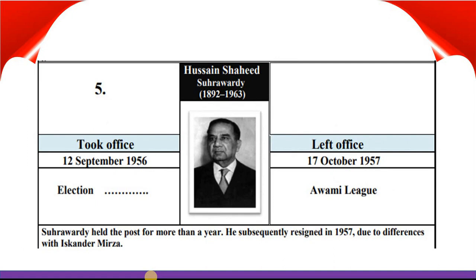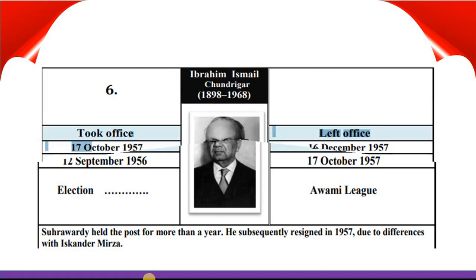Hussain Shaheed Suhrawardy took office 12th September 1956 and left office 17th October 1957. Suhrawardy held the post for more than a year. He subsequently resigned in 1957 due to differences with Iskander Mirza. He was the fifth Prime Minister of Pakistan.